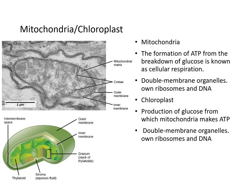Mitochondria form ATP from the breakdown of glucose in cellular respiration. They are double-membrane organelles with an inner and outer membrane, and contain their own ribosomes and DNA. Chloroplasts, found in photosynthesizing organisms, produce glucose from CO₂; they are also double-membrane organelles with their own ribosomes and DNA.